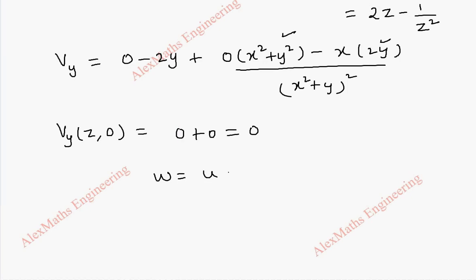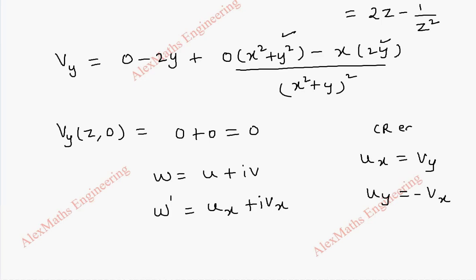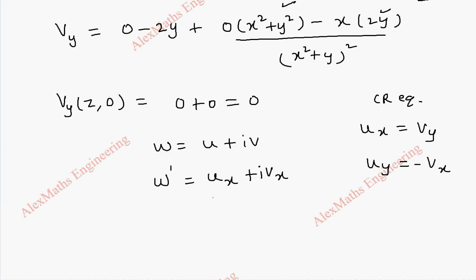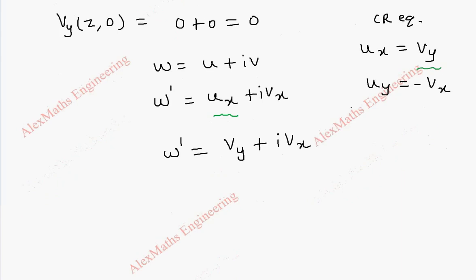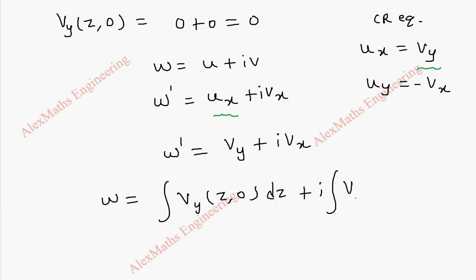Now w = u + iv and w' = ux + i·vx. From the Cauchy-Riemann equations, ux = vy and uy = −vx. Hence ux is replaced by vy, so w' = vy + i·vx. From the Milne-Thompson method, w = ∫vy(z, 0) dz + i·∫vx(z, 0) dz.